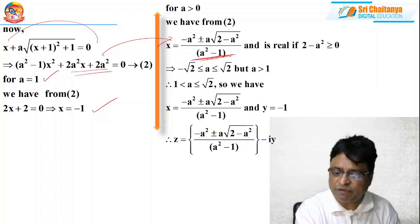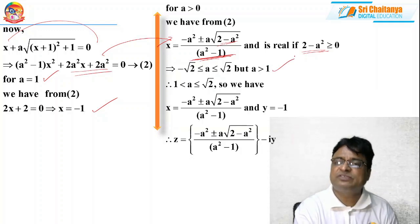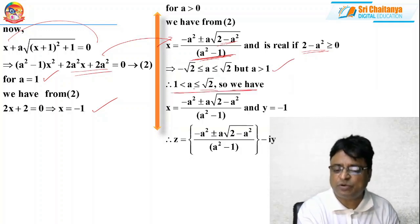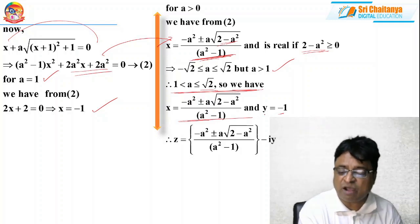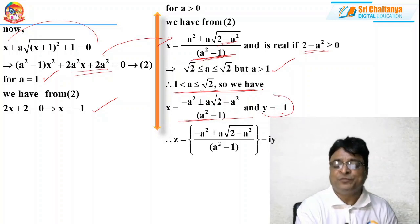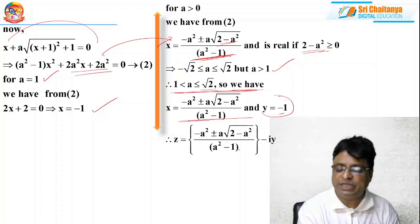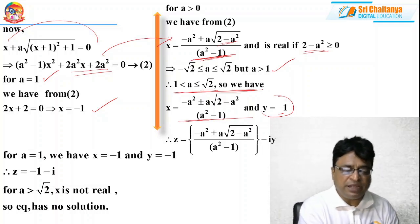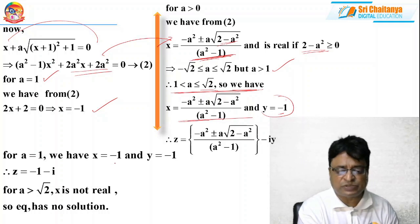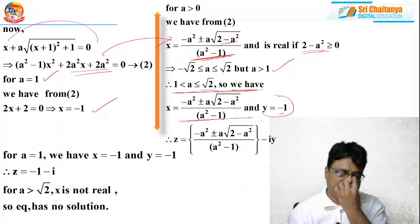The solution x = (−a² ± a·√(2−a²)) / (a²−1) is real only if 2 − a² ≥ 0, i.e., −√2 ≤ a ≤ √2. Combined with the condition a > 1, we get 1 < a ≤ √2. Whenever a lies in this range, the equation has real x values, and with y = −1, z = [(−a² ± a·√(2−a²)) / (a²−1)] − i. If a = 1, z = −1 − i. If a > √2, x is not real and the equation has no solution.